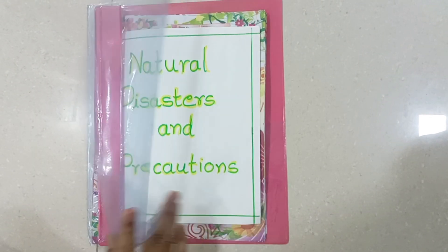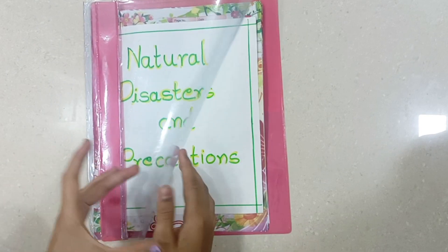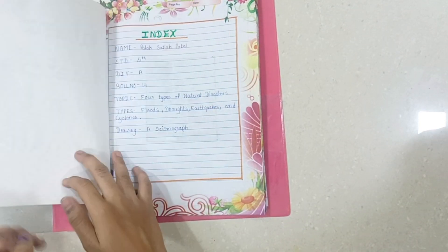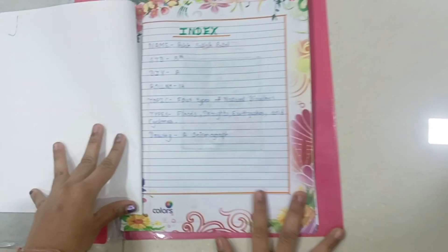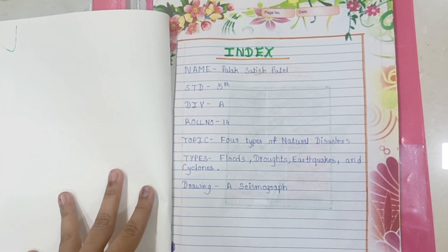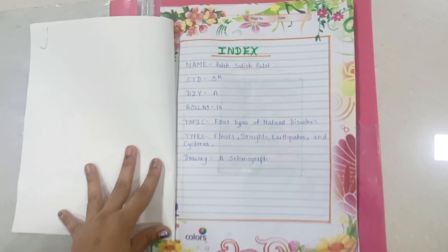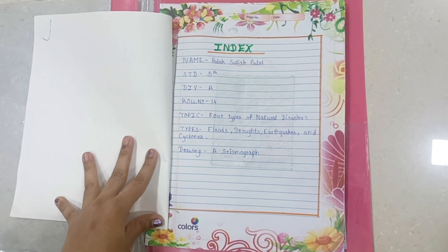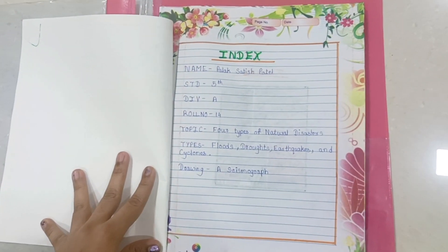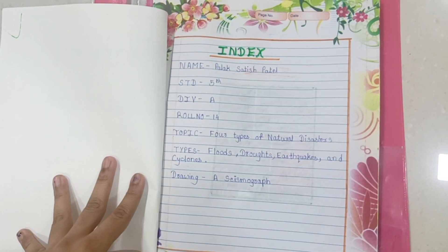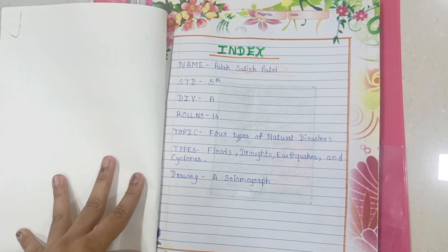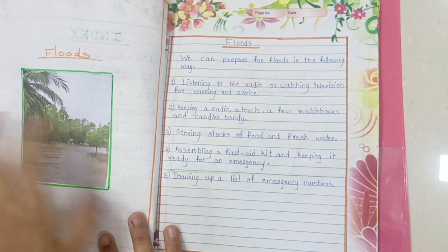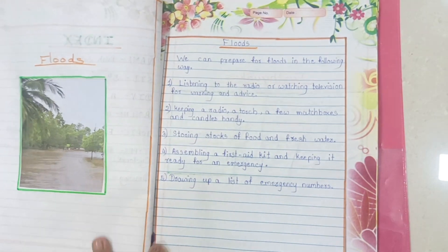I have done the project in this file. This is the index. In the index, I have written name, standard, division, roll number, and topic. The four types of natural disasters covered are: Flood, Droughts, Earthquake, and Cyclone.